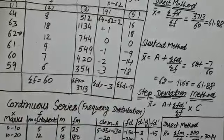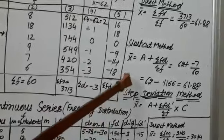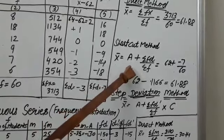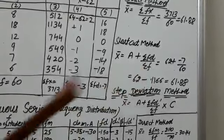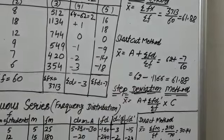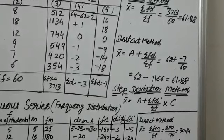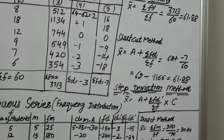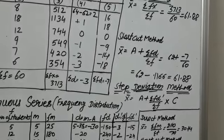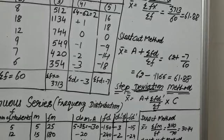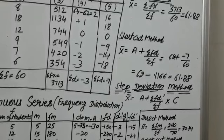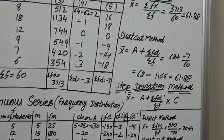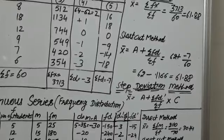Now the formula for calculating mean is x̄ = a + (sigma fd / sigma f), which equals assumed mean 62 plus (minus 7 / 60). So the average is 61.88.